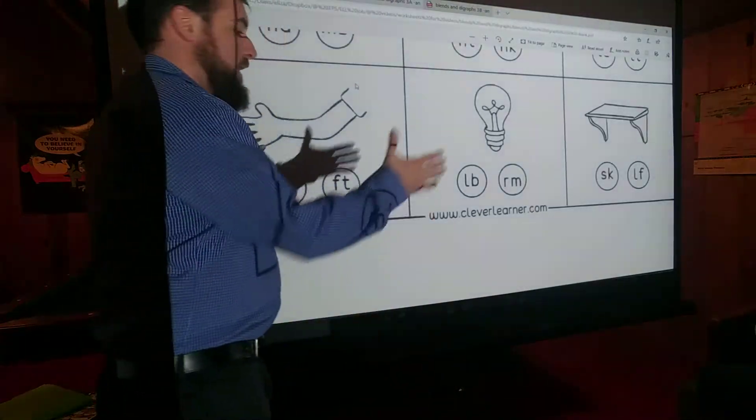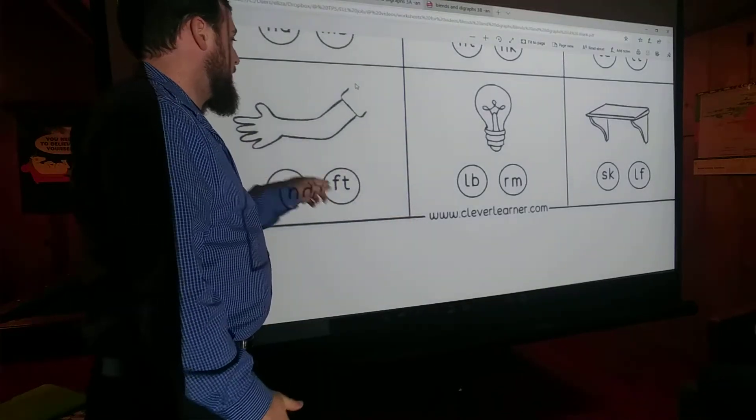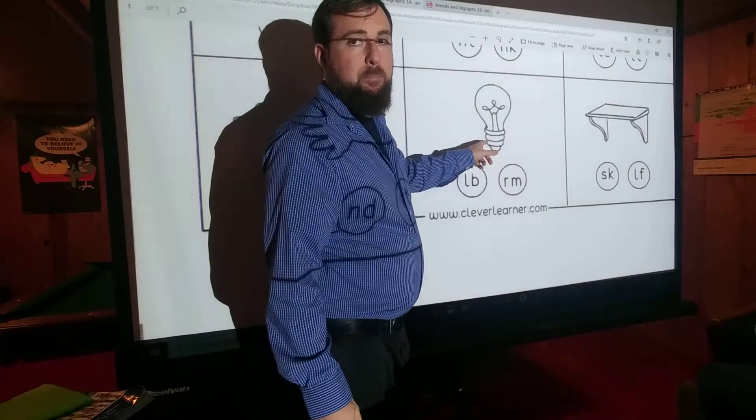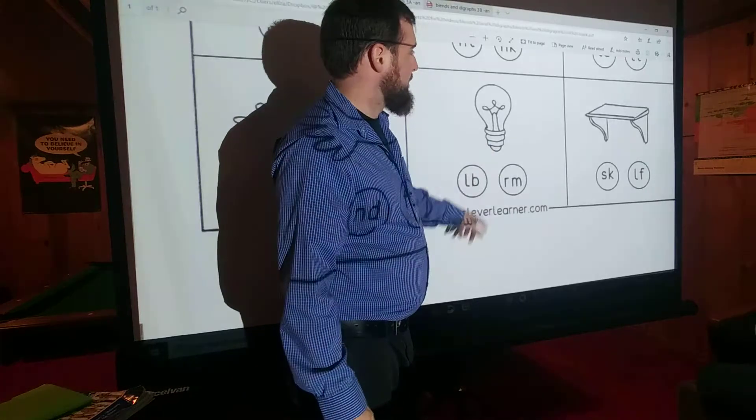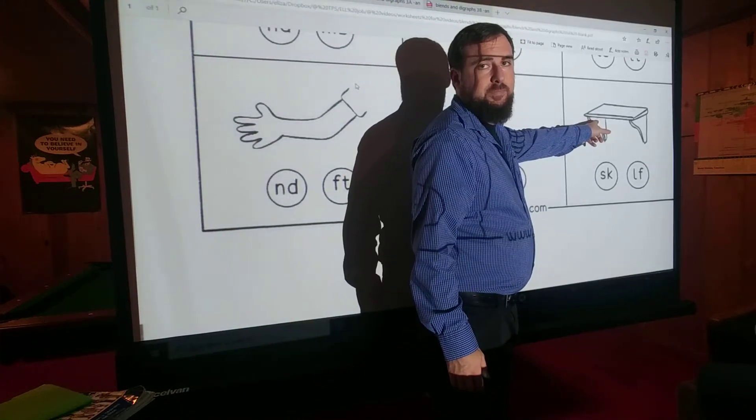And over here, this is a hand. Hand. Which one of these is hand? This is a bulb, a light bulb. Bulb. And this is a shelf. Shelf.